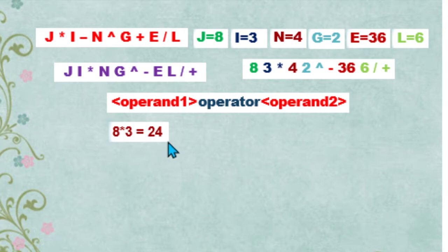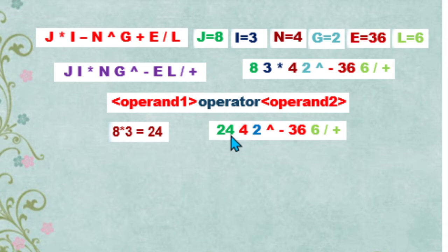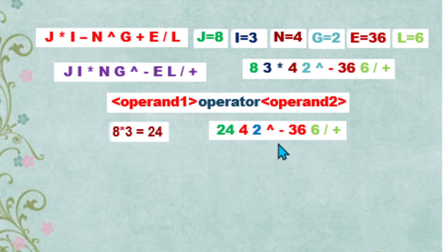We insert the obtained value 24 into our expression. Our expression now becomes: 24, 4, 2, exponent symbol, subtraction operator, 36, 6, division operator, and addition operator.